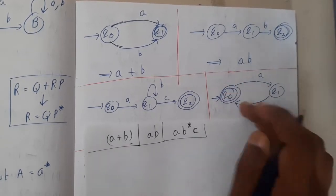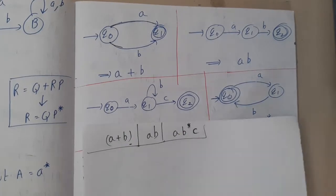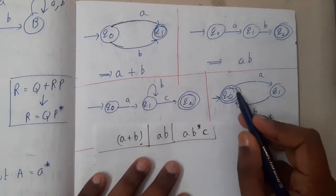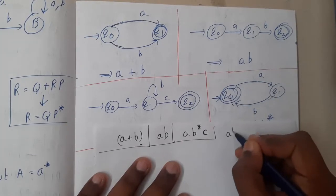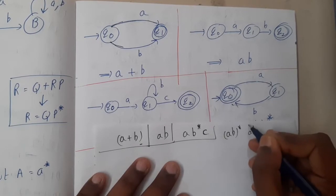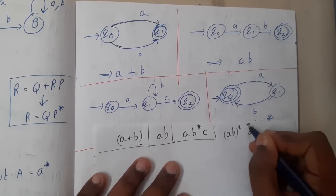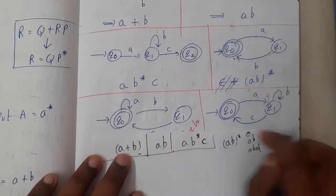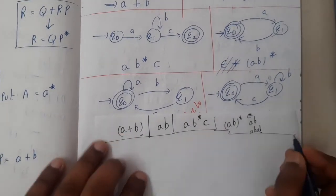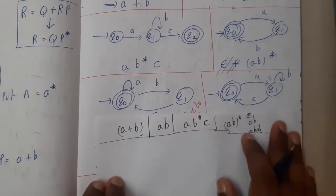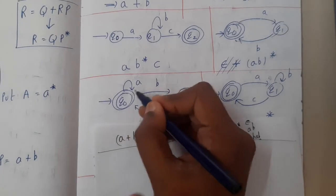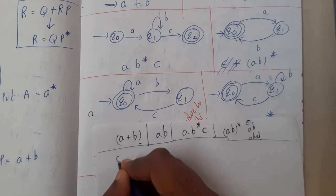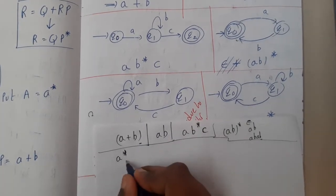Here we have a loop, so if you observe carefully, we are going to accept epsilon as well. Indirectly it is (ab)* — ab will be accepted, epsilon will be accepted, abab will be accepted, and so on. Moving to the next: this is a loop so any loop is nothing but star. It is a·a* — I can have a-star, and if I get 'b' I come back and need 'c', so b and c will form a pair.